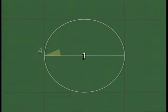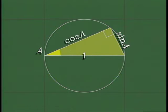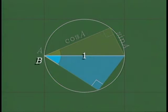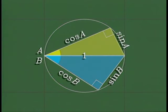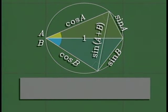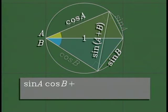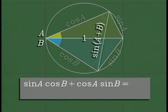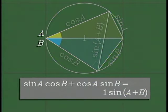Now we'll use Ptolemy's theorem to derive addition formulas for both the sine and cosine. Start with a circle of diameter one, take angle A and form a right triangle — the lengths of its legs are sine A and cosine A. Use angle B to form another right triangle with legs sine B and cosine B. The two triangles together form a quadrilateral inscribed in a circle with one diagonal being a diameter of length one. The length of the other diagonal is the sine of A plus B. Now apply Ptolemy's theorem, and we get the addition formula for sines.